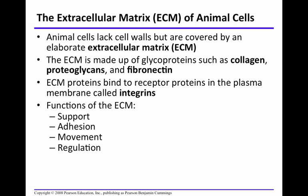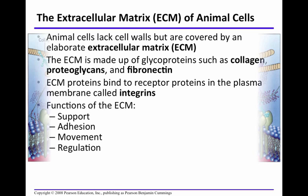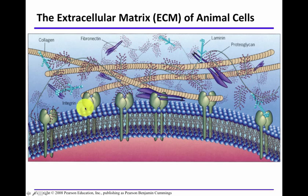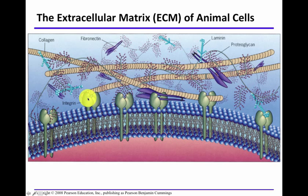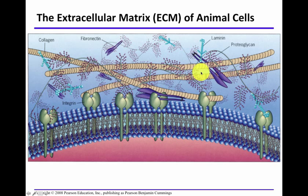Looking at a diagram of the plasma membrane, you can see the hydrophilic heads and hydrophobic tails. Notice integrins in the plasma membrane connected to the extracellular matrix. In the extracellular matrix you can see collagen fibrils attached via integrins, fibronectin, laminin, and proteoglycans. The extracellular matrix of animal cells is outside of the plasma membrane and still provides support for the cell.